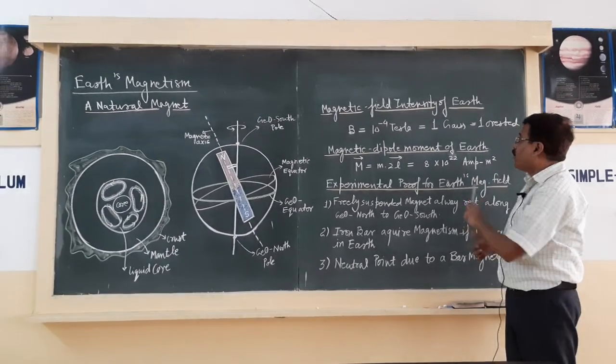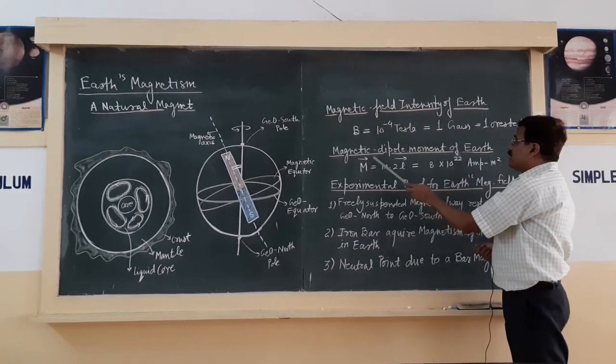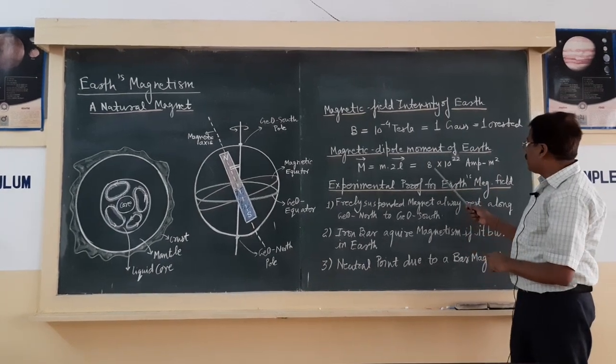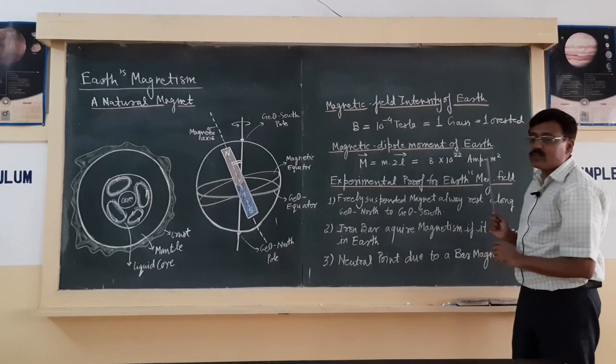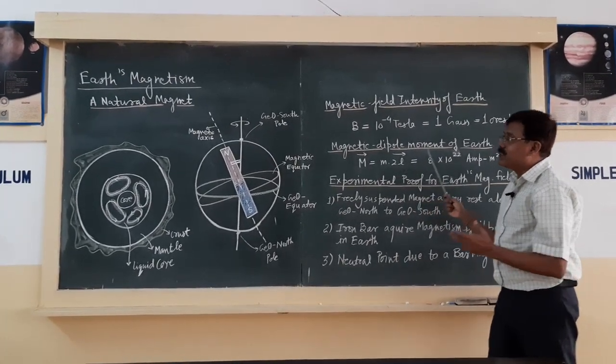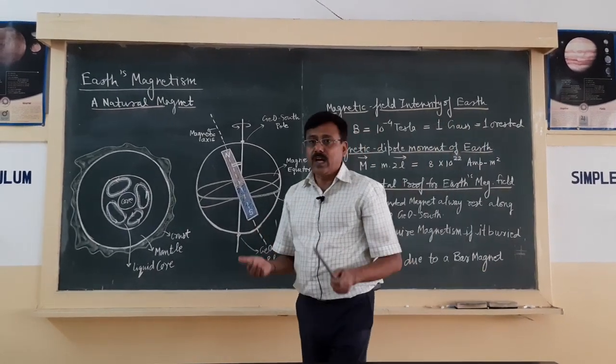The second thing is the magnetic dipole moment of our earth system. It is of the order of 8 into 10 to the power 22 ampere meter square, by the formula m is equal to M into 2l. So this is the microscopic approach of earth magnetism.